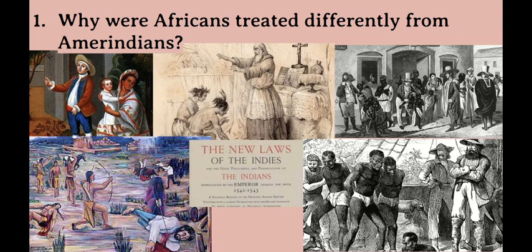the Spanish arrived in America and set up encomienda, or giant farms and mines, where Spanish or Portuguese men were allowed to take claim to the land and the Amerindians who lived there. The rules for encomienda meant that the Spanish were supposed to treat the Indians with a certain amount of respect and care. These Amerindians lived in family groups, often in their actual villages near where the Spanish settled.